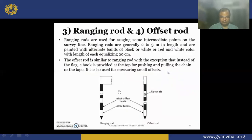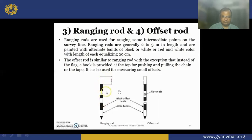Next are ranging rods. The ranging rods and offset rods appear similar. The only difference is that the offset rod is similar to a ranging rod but instead of a flag, it has a hook. The height of the ranging rod is 2 to 3 meters, and it has alternate bands of black, white, or red colors. Each band length is 20 centimeters. The hook provided on the offset rod is used to pull or push the chain.